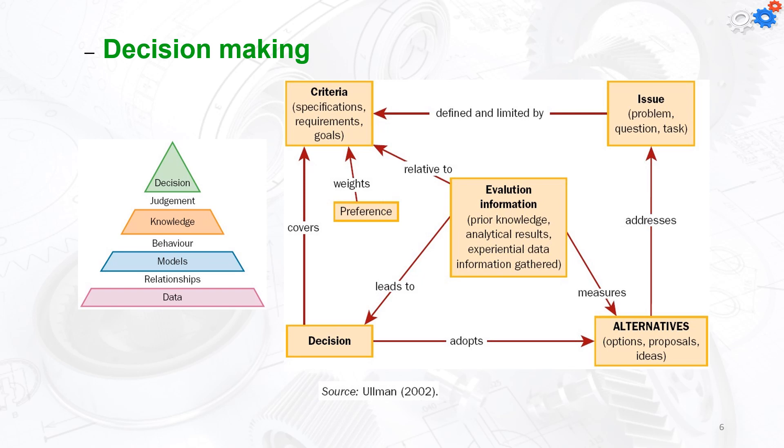We start with the flow chart presented by Allman in 2002. We begin with the decision, the adults or alternatives. We cover the criteria including specification requirements and goals. We use the preference, the issue which is the problem itself, and apply the tasks for the design procedure. Then we use evaluation of the information for every single stage to update the final decision.